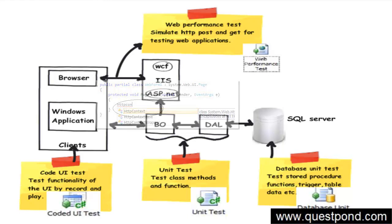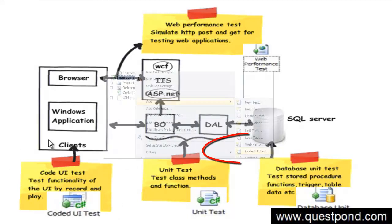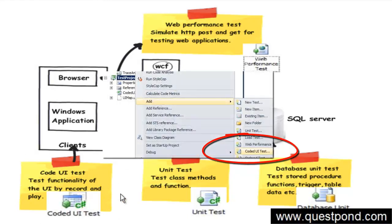The infrastructure of every user interface technology is very different. For example, if you go to WPF, there is a XAML file and the behind code is also a bit different. It is very difficult to accommodate each of these user interface infrastructures and do testing on them. The best way to test a UI is by doing a record and play — you record your test steps and then play them and do the assertions. Microsoft has given us the Coded UI test for this purpose.